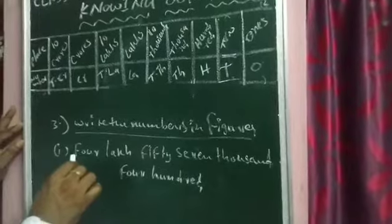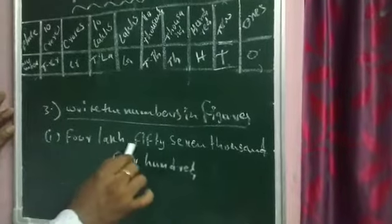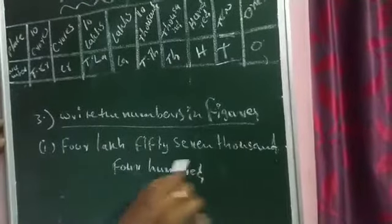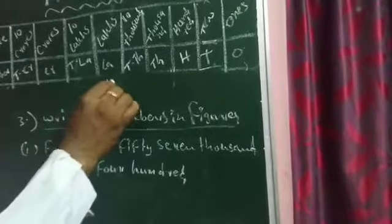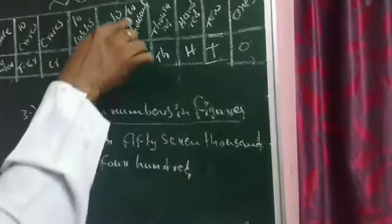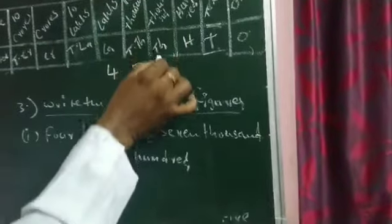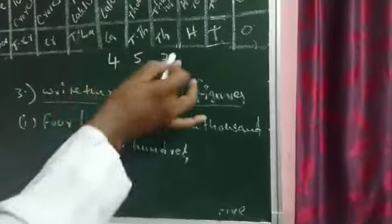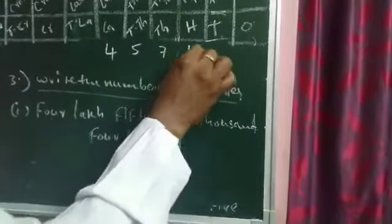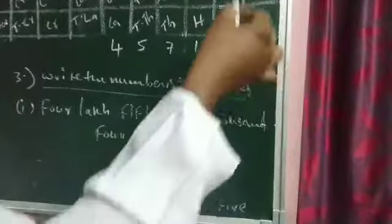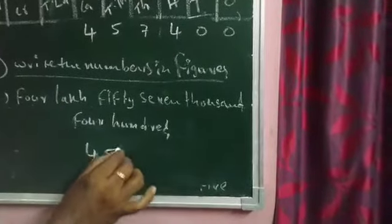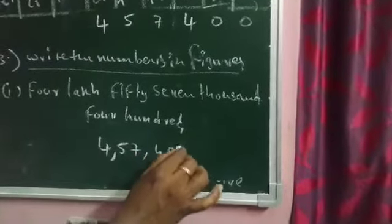In question three, the words are already given and you write in figures. First one: four lakh fifty-seven thousand four hundred. Observe: lakhs place is four; ten thousands plus thousands is fifty-seven, meaning five in ten thousands place and seven in thousands place; hundreds place is four; tens place has no value; ones place has no value. So write two zeros for tens and ones. The figure is 4,57,400.